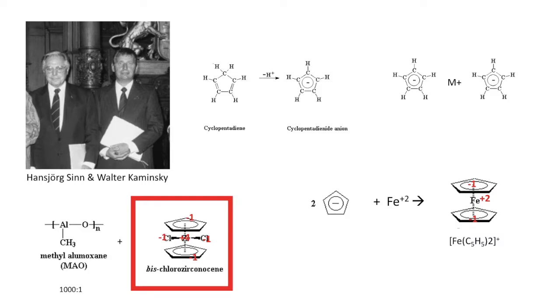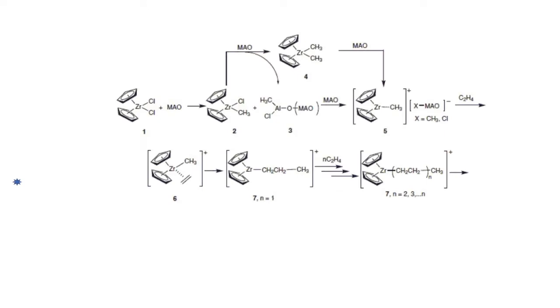This metallocene combined with methyl alumoxane is a homogeneous catalyst used in the Ziegler-Natta polymerization of olefins. As said before, MAO is added to help the zirconocene complex catalyze a polymerization. MAO needs to be at almost a thousand times the amount of the catalyst.